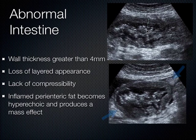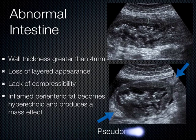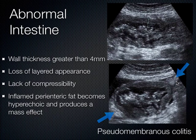Sometimes you get perienteric fat around the rim of the intestine when there's inflammation going on. In this patient with pseudomembranous colitis, we can see this hyperechoic area here — all this stuff kind of gets tacked down together, this perienteric fat. It's not unlike the cobblestoning you see with cellulitis. Whenever there's inflammation anywhere in the body on ultrasound, it appears as hyperechoic areas — that's how inflamed tissue looks.